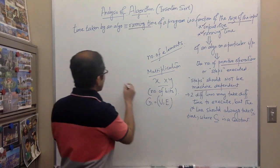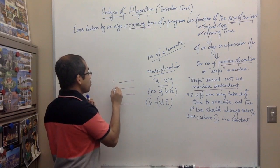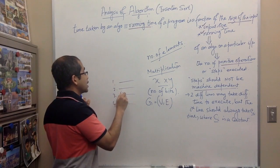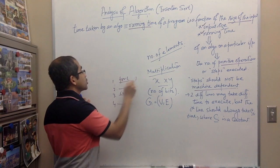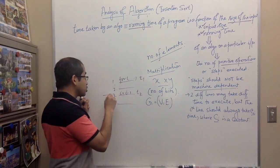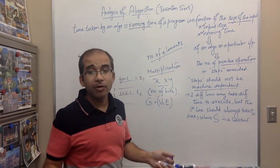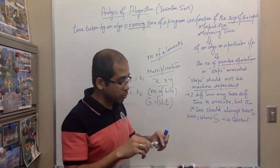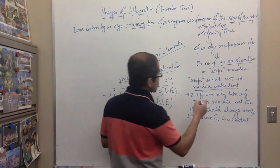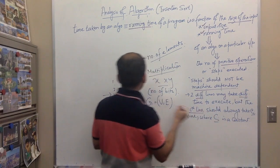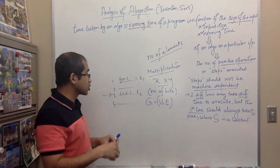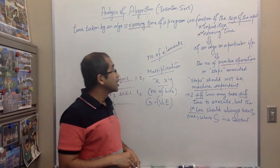When executing an algorithm, different lines may take different amounts of time. For example, a statement like i = i - 1 and a for loop may take different times, t1 and t2 respectively. However, each time a specific line is executed, it should always take the same fixed constant time. So two different lines may take different times, but the i-th line should always take ci, a constant amount of time.